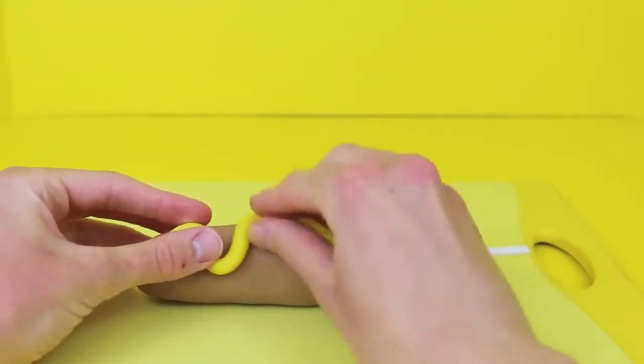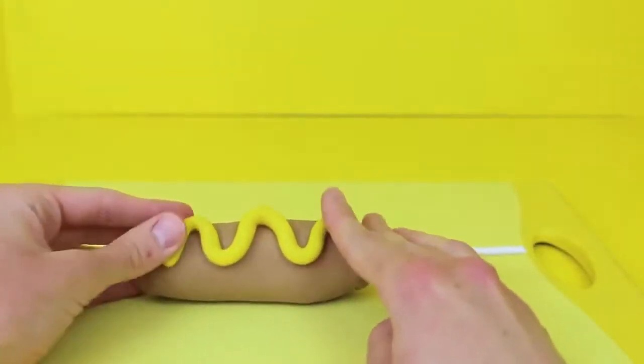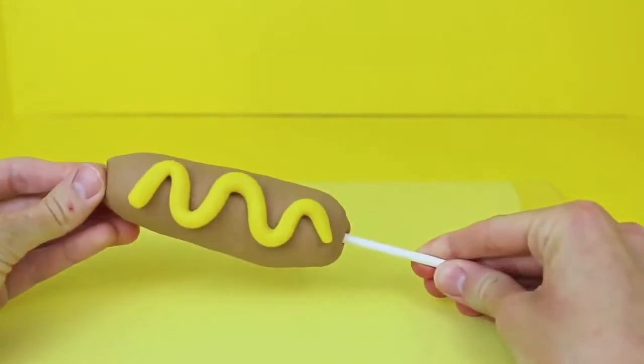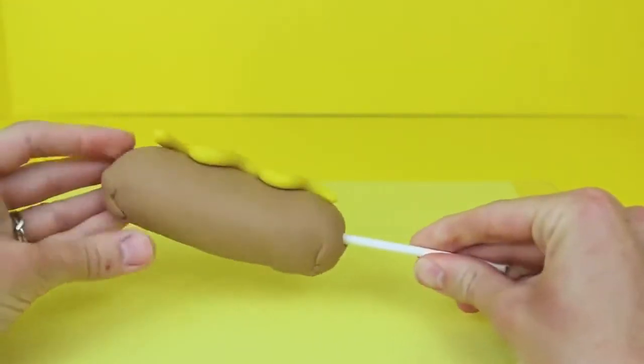Then place it on your corn dog and you want it to look wavy and pretty so just pull that up and down up and down and make sure it's on there tight and ta-da here's our corn dog. Very yummy.